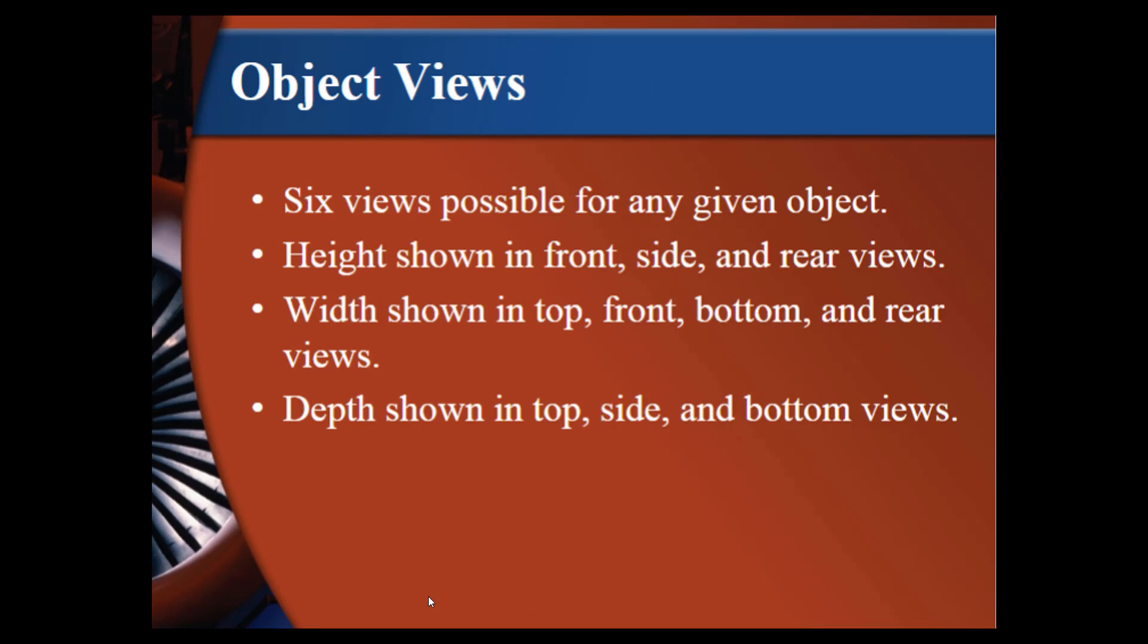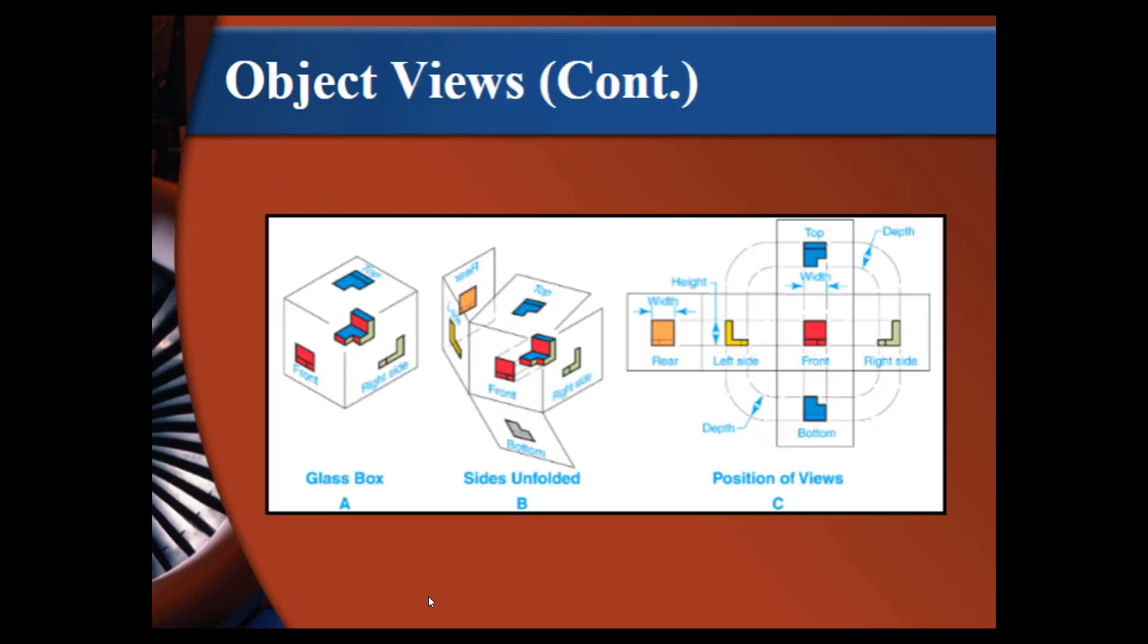As I mentioned, there are six views possible for any given object. The height is shown in the front, the side, and the rear views. The width is shown in the top, front, bottom, and rear views. The depth is shown in the top, side, and bottom views. With our glass box, if we take it and we fold it out completely, the diagram over here on the right indicates how that box folds out.